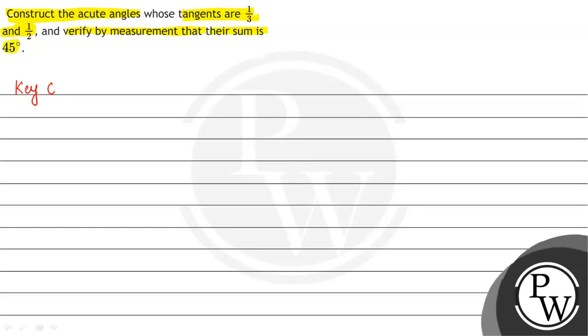The key concept to solve this question is that tan(A + B) equals tan A plus tan B divided by 1 minus tan A into tan B. Here we will use the second concept that tan 45 degrees value is equal to 1.